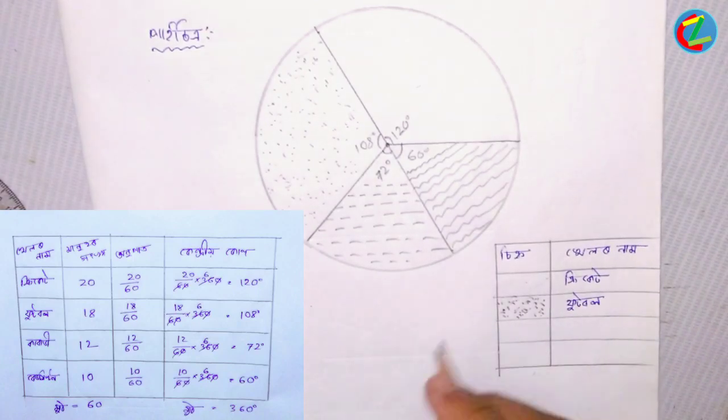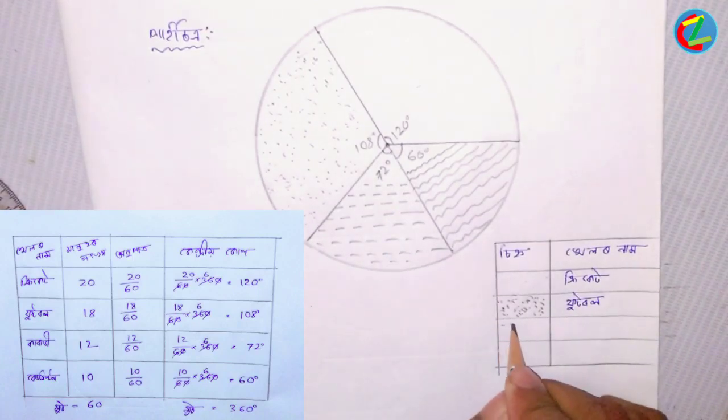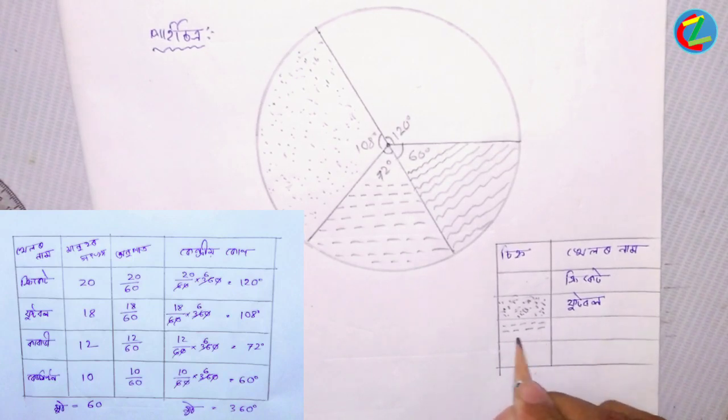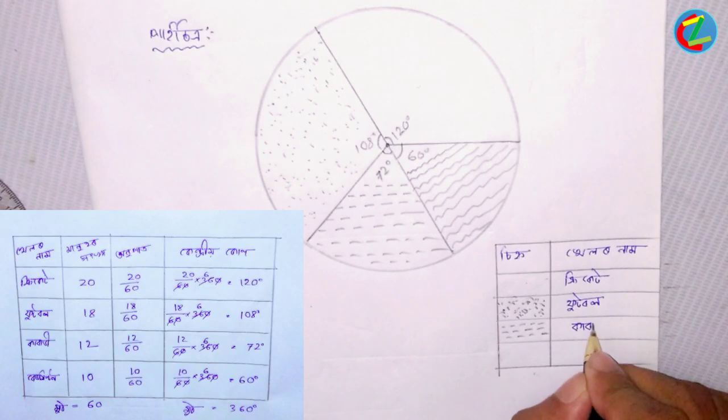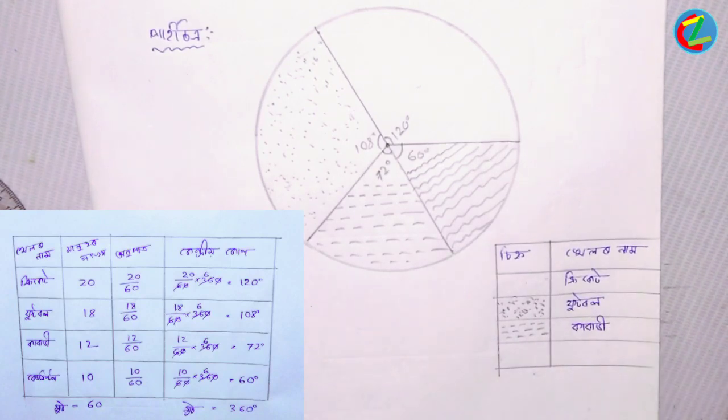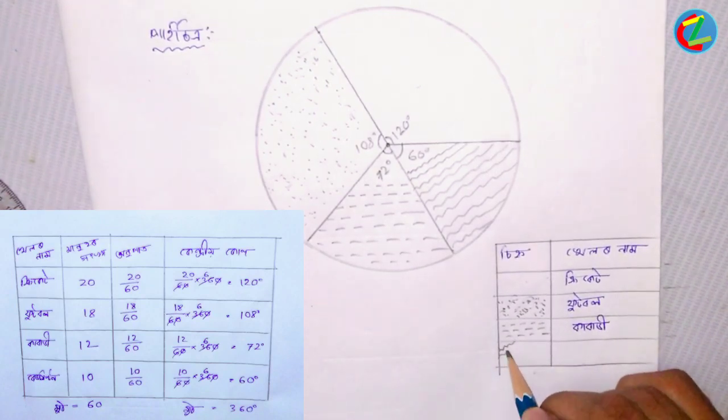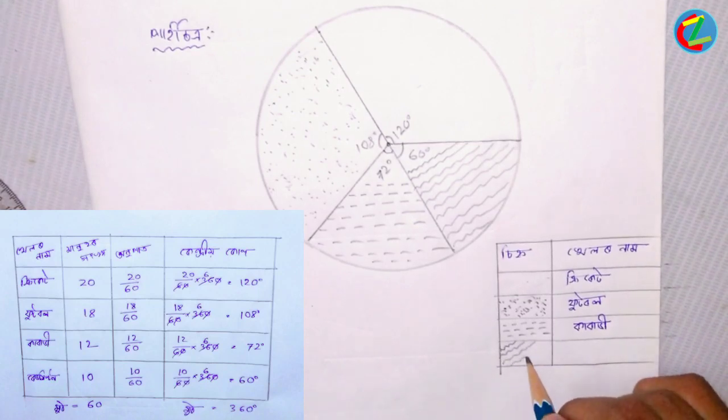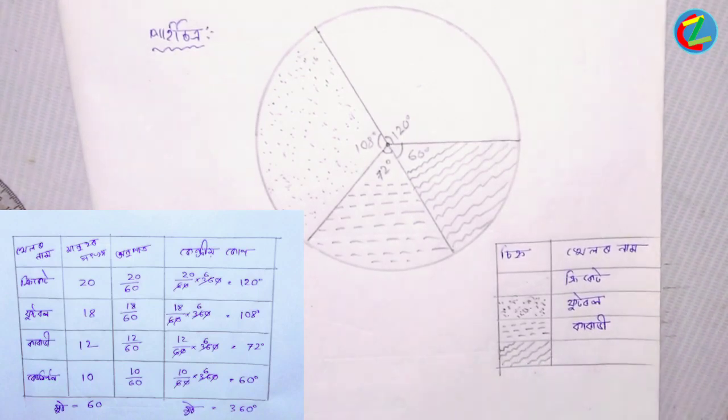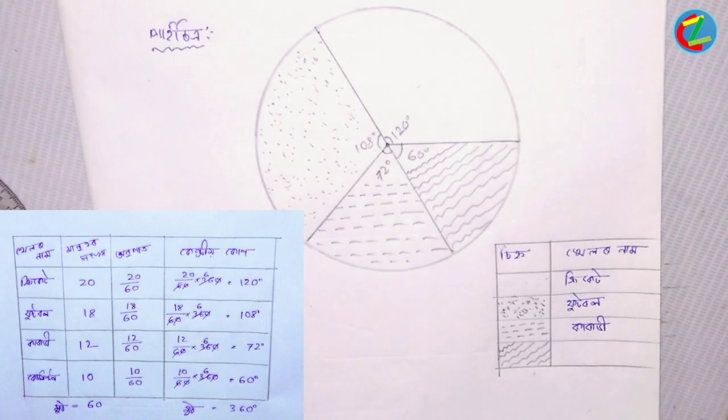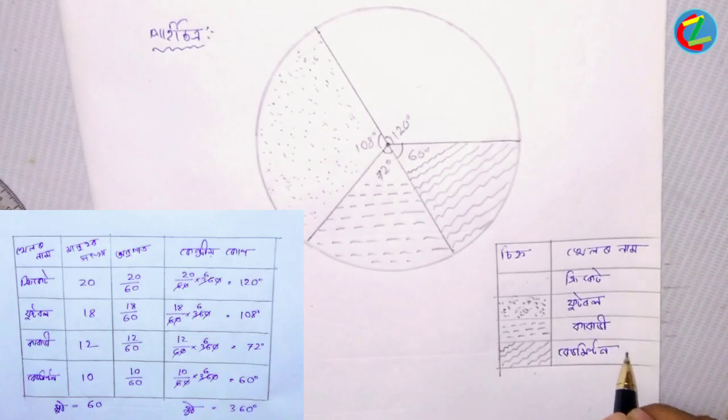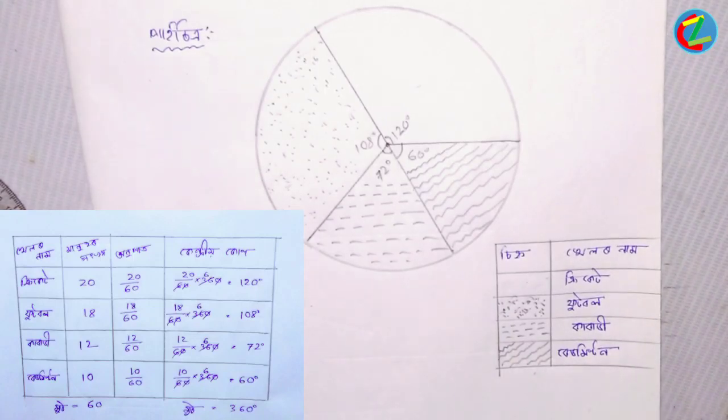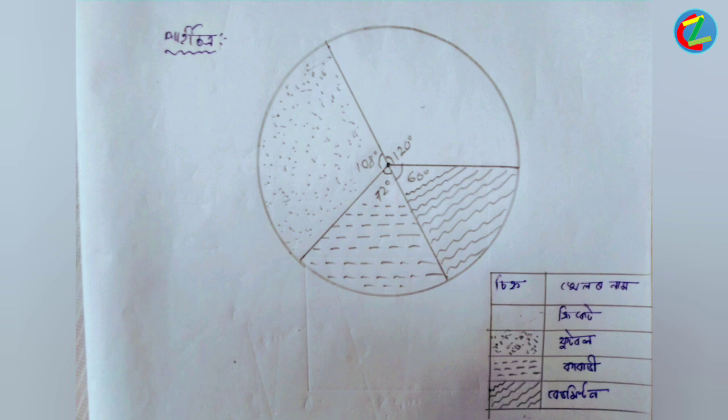This is the completed pie chart showing all the sports data. Each section represents cricket, football, and badminton with their proper proportions. This is how we convert data into a visual pie chart representation.